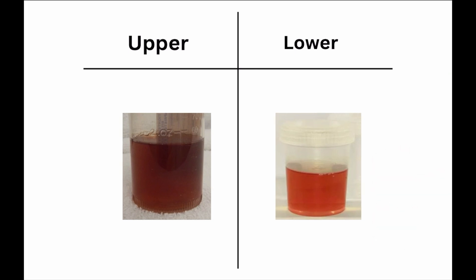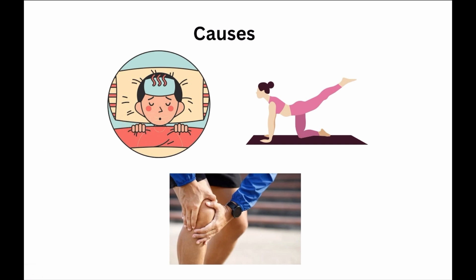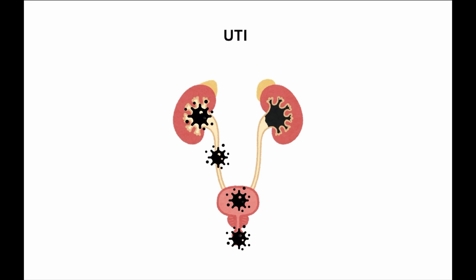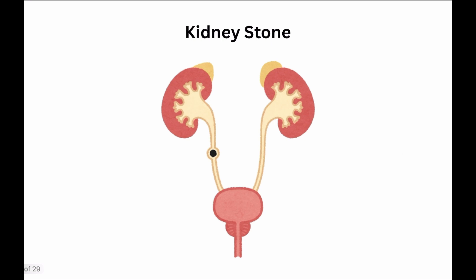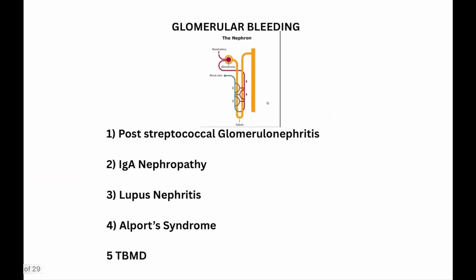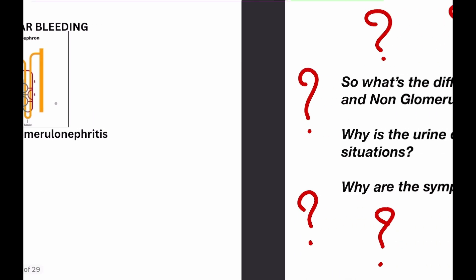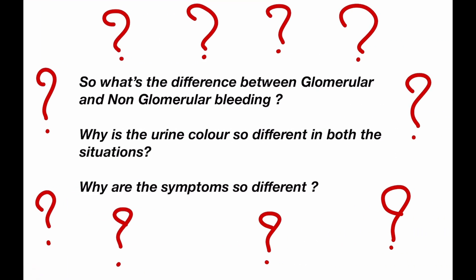The most common causes of hematuria can be fever, exercise, or any trauma. Other causes include urinary tract infections anywhere along the urinary tract, or kidney stones — which damage the urothelium resulting in bleeding into the urinary tract. The most important causes are glomerular bleeding: post-streptococcal glomerulonephritis (PSGN), IgA nephropathy, lupus nephritis, Alport syndrome, and thin basement membrane disease, among others.